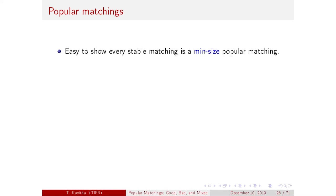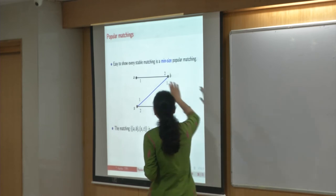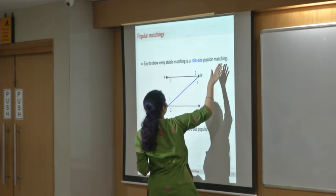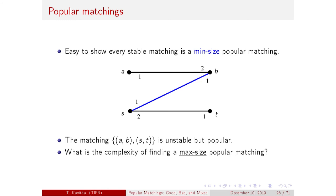Every stable matching is a minimum size popular matching. Going back to the starting example, the black matching is a popular matching — though not a stable matching — and being a perfect matching, it is a maximum size popular matching. Since we were not happy with the size aspect of stable matchings, when we generalize to popular matchings, what we really want is a maximum size popular matching. Finding a minimum size popular matching is easy: run the Gale-Shapley algorithm. What is the complexity of finding a maximum size popular matching?